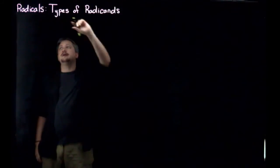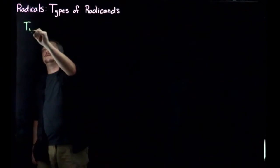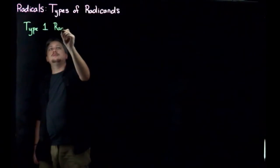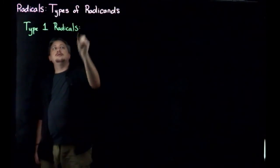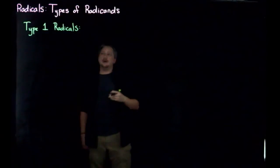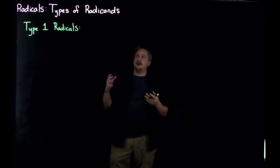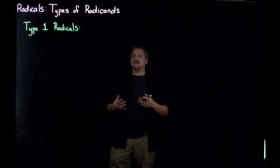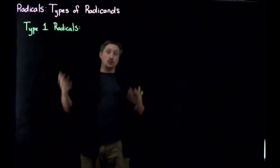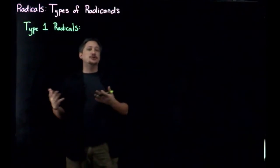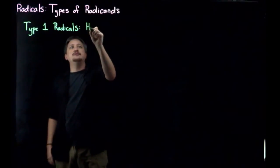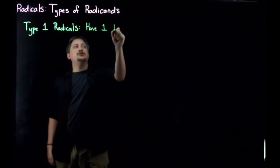So in particular we have the two types that we're going to be talking about. We have type 1s. Type 1 radicals are radicals where the radicand, the part inside the radical, is already factored. In particular, type 1 has one term. That term may have multiple factors. It has one term.